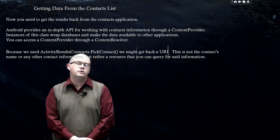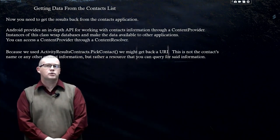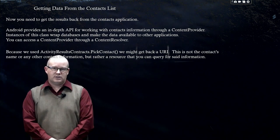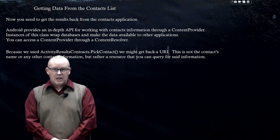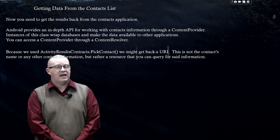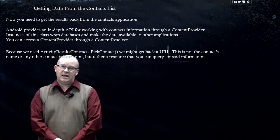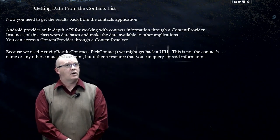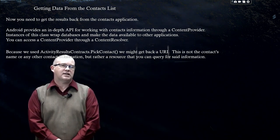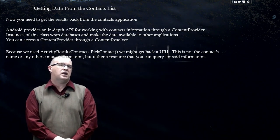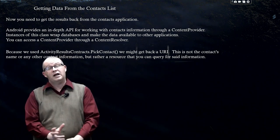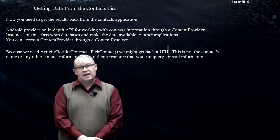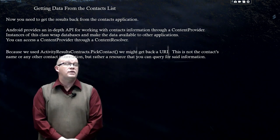Welcome back, CSE 3200 UConn Storrs. We're in video 7 of chapter 16. In the last video we made an intent to get a contact — it appeared to work. We were able to get into our contacts app, select a contact, but then it became a dead end. We never got anything back from the contacts. That is something we're going to do in this video.